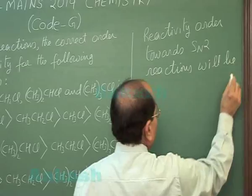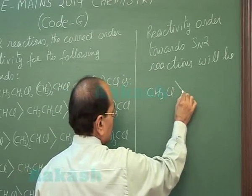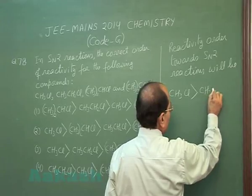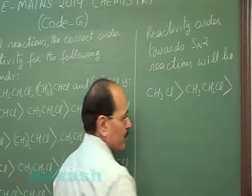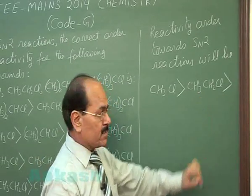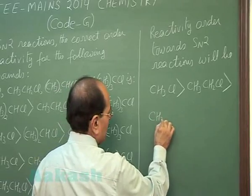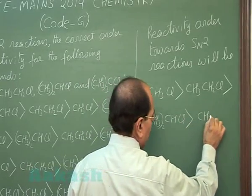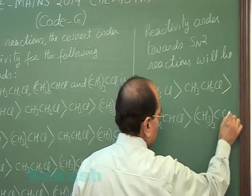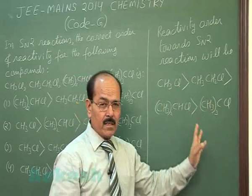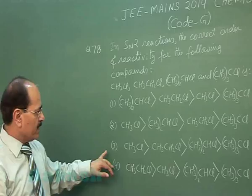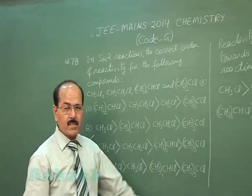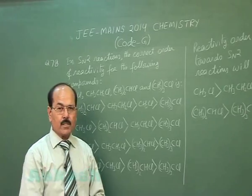The correct answer is decided by steric hindrance at the attacking center. Methyl chloride will be most reactive because steric hindrance is least, followed by ethyl chloride where steric hindrance has slightly increased, followed by isopropyl chloride, and tertiary butyl chloride will be least reactive. Option three is the correct answer.